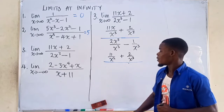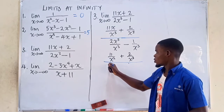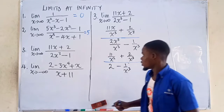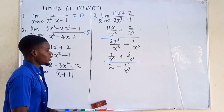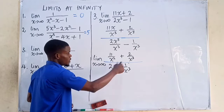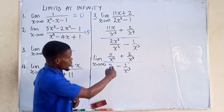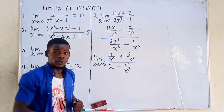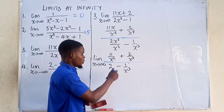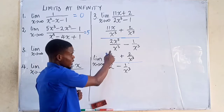In the denominator, x cubed over x cubed gives us just 2, then minus 1 over x cubed. Now let's take the limit as x tends to infinity of this whole function. As x tends to infinity, 11 divided by infinity squared is still 11 divided by infinity, which equals 0, since 11 is a constant and x is increasing without bounds.